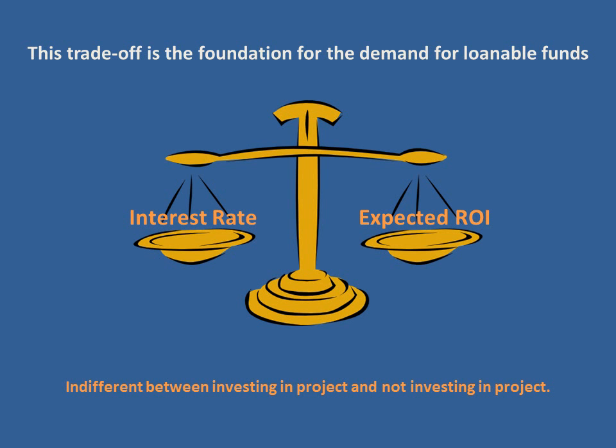This should look familiar from the first two videos. The demand for loanable funds really goes back to the decision the firm is making: should I invest in a project or should I not? That's going to depend on the relationship between the interest rate and the expected return on investment. If they were the same, the firm would be indifferent. In the second video we talked about keeping the expected return on investment constant and then changing the interest rate, and by doing that we were able to draw the demand curve for loanable funds.